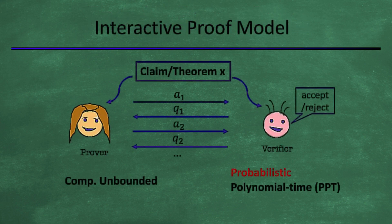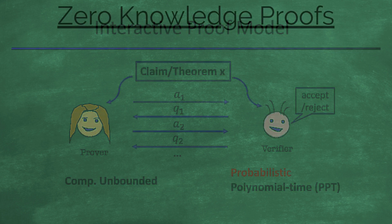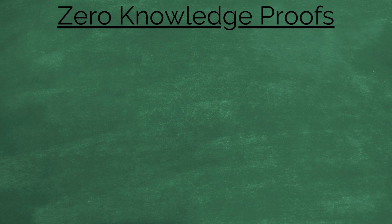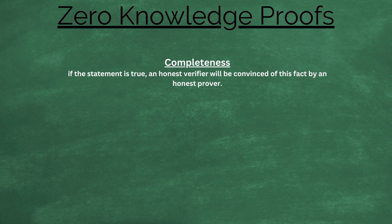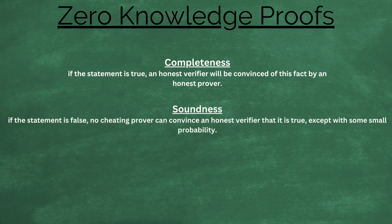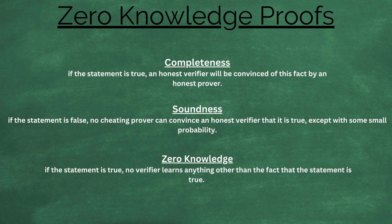This scenario is actually an example of an interactive proof, as there were multiple rounds of messages between the prover and the verifier. In general, Zero Knowledge proofs must satisfy three main properties. Completeness: if the statement is true, an honest verifier will be convinced of this fact by an honest prover. Soundness: if the statement is false, no cheating prover can convince an honest verifier that it's true, except with some small probability. And Zero Knowledge: if the statement is true, no verifier learns anything other than the fact that the statement is true.